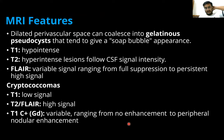MRI features include dilated perivascular spaces that can coalesce into gelatinous pseudocysts, tending to give a soap bubble appearance. On T1, it shows hypo-intense lesions. On T2, hyper-intense lesions follow CSF signal intensity. On FLAIR, there is variable signal ranging from full suppression to persistent high signal. Cryptococcomas appear low signal on T1 and high signal on T2 and FLAIR images. On T1 contrast, enhancement is variable, ranging from no enhancement to peripheral nodular enhancement.